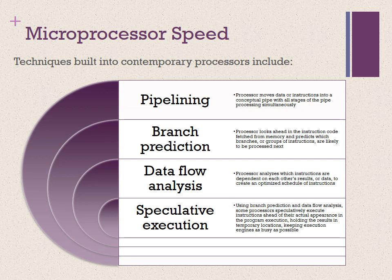Different techniques were invented and built into contemporary processors to speed up processing power. One of these techniques is known as pipelining. With pipelining, a processor can simultaneously work on multiple instructions — the processor overlaps operations by moving data or instructions into a conceptual pipe with all stages of the pipe processing simultaneously. It's like the effect of water flowing through a pipeline: when you cut off the water, it doesn't stop flowing out immediately — it takes some time.